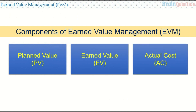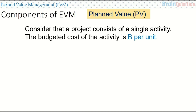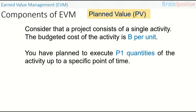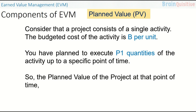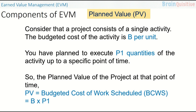Now we will see these components in detail. What is planned value? Consider that a project consists of a single activity. The budgeted cost of the activity is B per unit. You have planned to execute P1 quantities of the activity up to a specific point of time. So the planned value at that point is the Budgeted Cost of Work Scheduled, or BCWS, which equals B multiplied by P1.